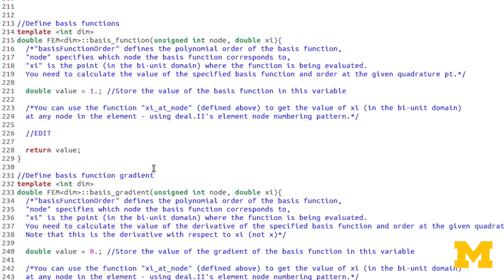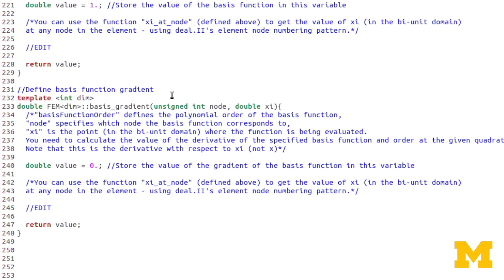Now again, in the code, we move on to basis gradient. In general, a gradient would be a vector, right? But this is 1D, so there's just one component. So I'm only returning a double. But we have the same inputs, node and xi. And remember, this is just the derivative with respect to xi. It's not the derivative with respect to x in the real domain. Again, we're dealing strictly with the bi-unit domain here.